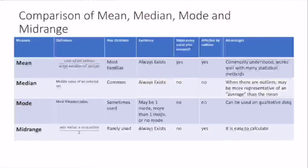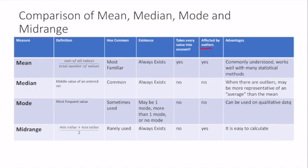This table right here I find really helpful. This is a comparison of the mean, median, mode, and range. This is something to keep in mind. We haven't talked about outliers yet, but we will in the next section.